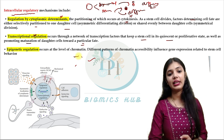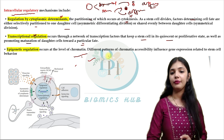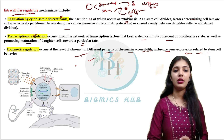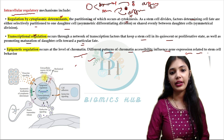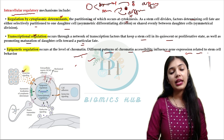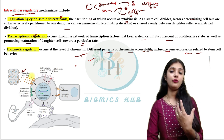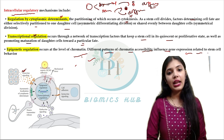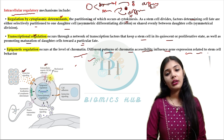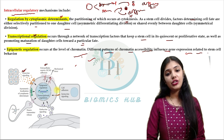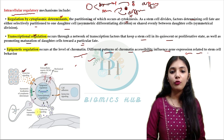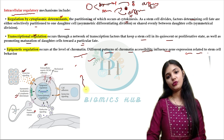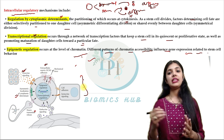The next is epigenetic regulation, which occurs at the chromatin level — different patterns of chromatin accessibility influence gene expression related to stem cell behavior. From the diagram we can see that paracrine factors are responsible for deciding whether it will form a differentiated form or remain a stem cell; extracellular matrix causes addition of molecules or cell-to-cell contact; there is also endocrine signaling and asymmetrical localization of cytoplasmic determinants. These are the factors which regulate stem cell behavior.